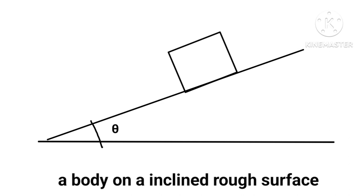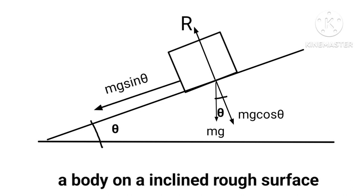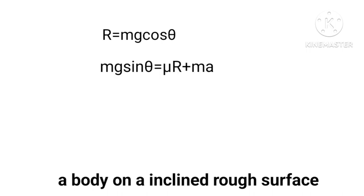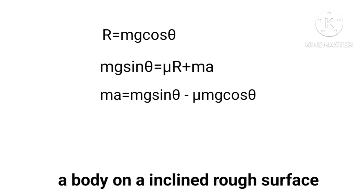Let us consider a body placed on a rough inclined plane. Two forces act: mg vertically downwards and reaction R vertically upward to the inclined plane. Resolving mg into two components: mg cos θ opposing R, and mg sin θ downwards along the plane. The body slides down due to mg sin θ, while frictional force μR acts in the opposite direction. With acceleration a: R = mg cos θ, and ma = mg sin θ − μmg cos θ, hence a = g(sin θ − μ cos θ).